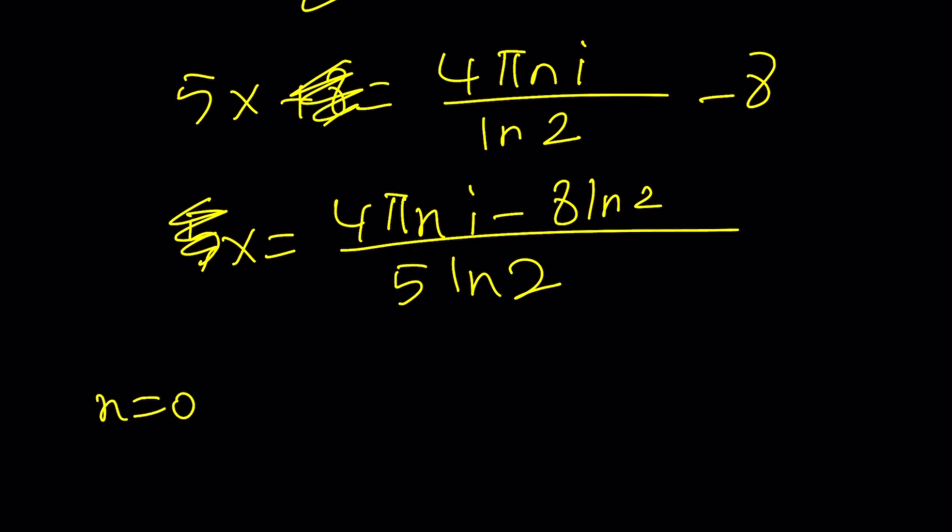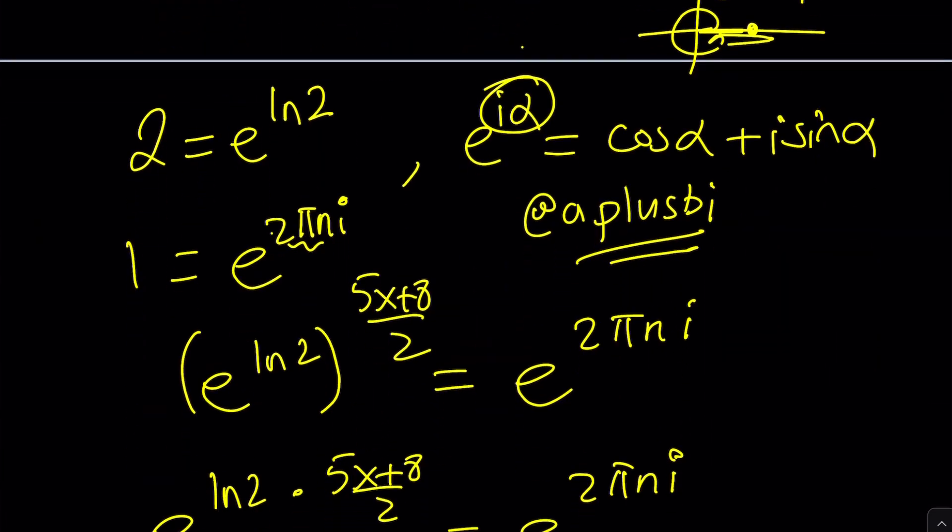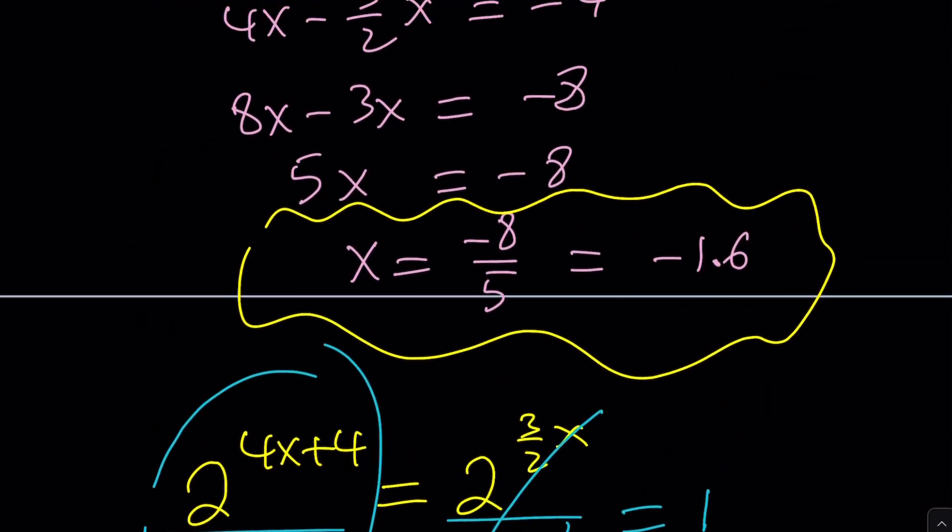So for example, if n is equal to 0, from here, you get x equals negative 8 ln 2 divided by 5 ln 2. ln 2 cancels out. And you end up with negative 8 over 5, which is the real solution. That is the real value.